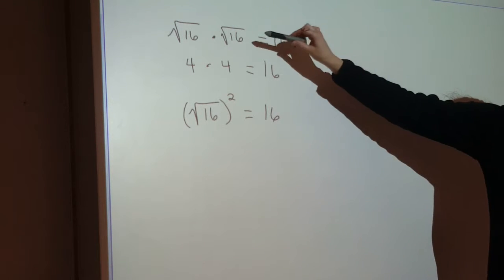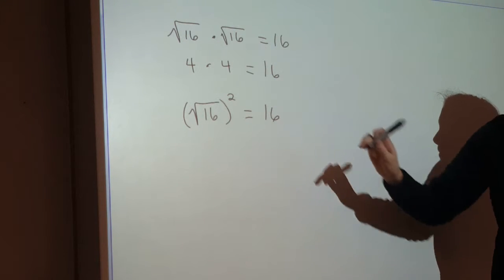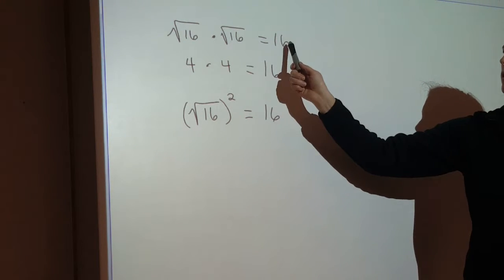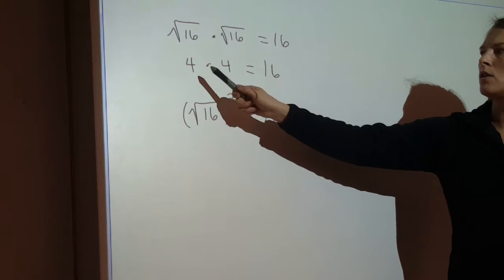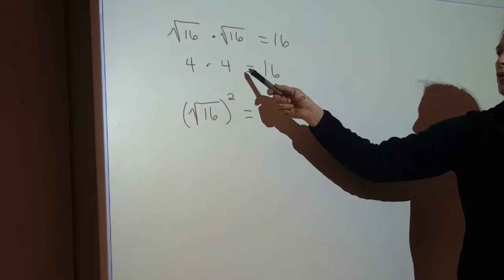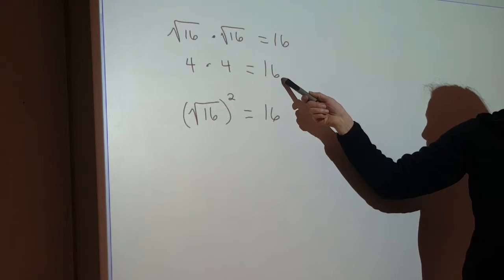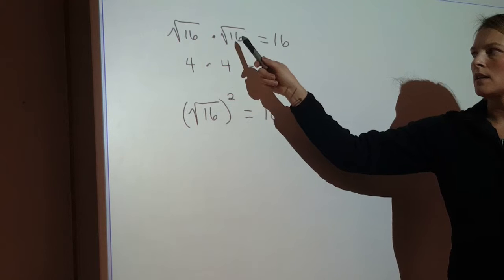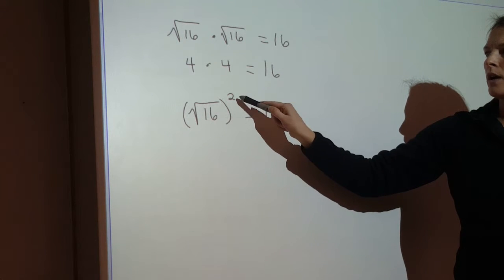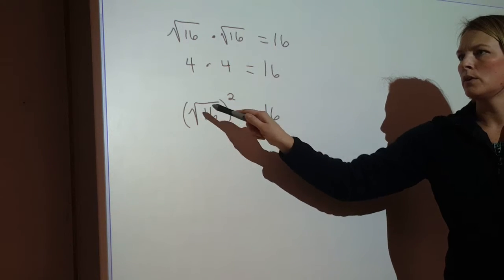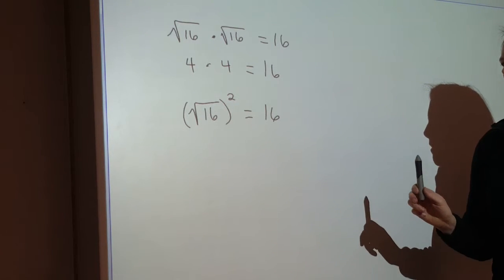So these are three different ways to see it: if you have a square root times the square root, that's just 16. Or if you take the square root first and multiply, that's 16. Or anything times itself is squared, and the squared and the square root undo each other.